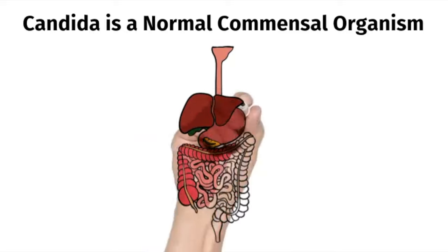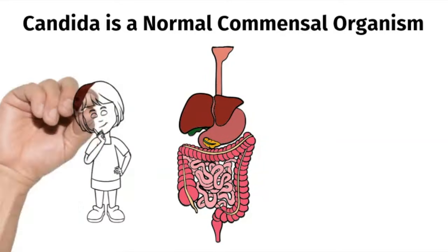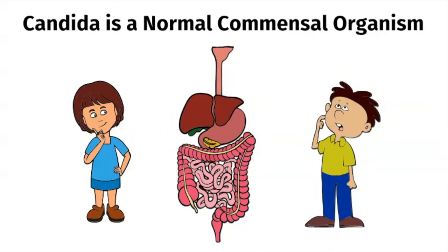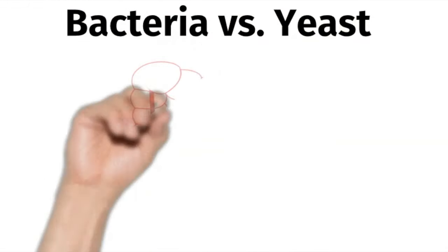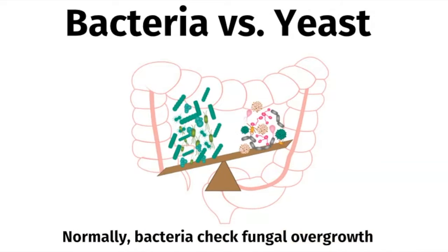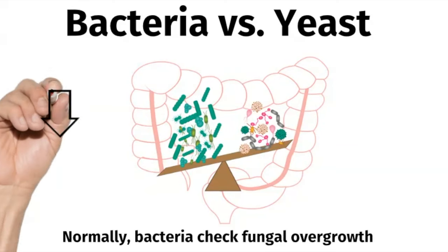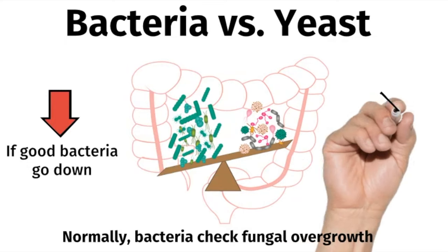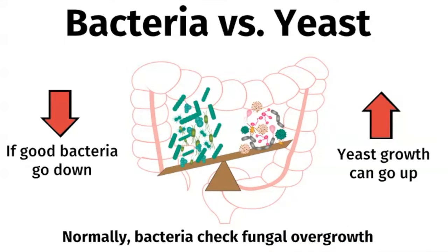Did you know that Candida albicans is actually a normal commensal organism in our GI tract? Usually it's not a problem unless it overgrows and interferes with the balance of friendly bacteria in our body. Normally there's a balance between bacteria and yeast, and normally the bacteria check fungal overgrowth. But if something causes our good bacteria to go down, this can allow the yeast to overgrow and take over.